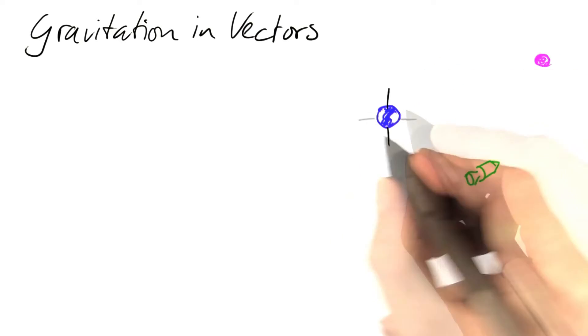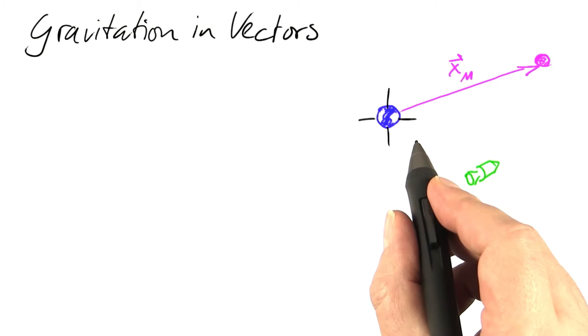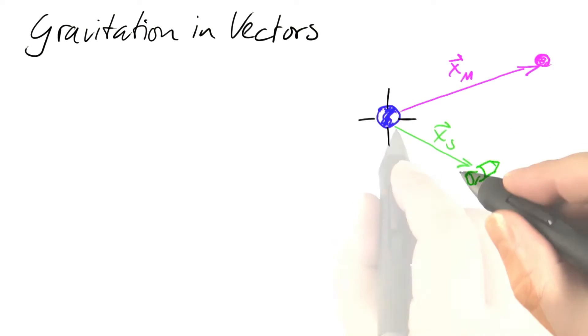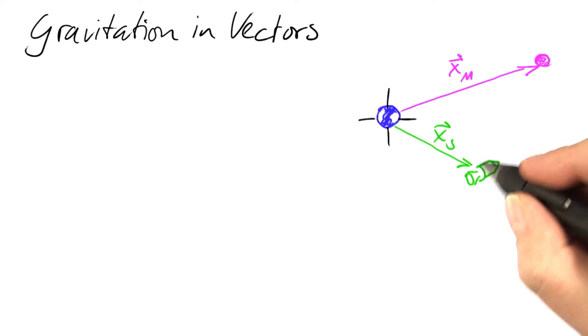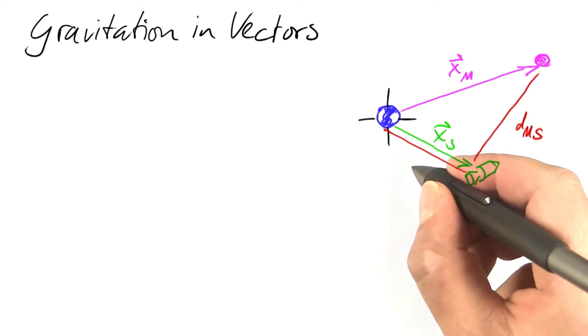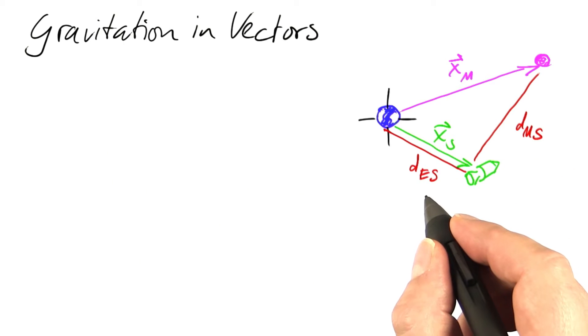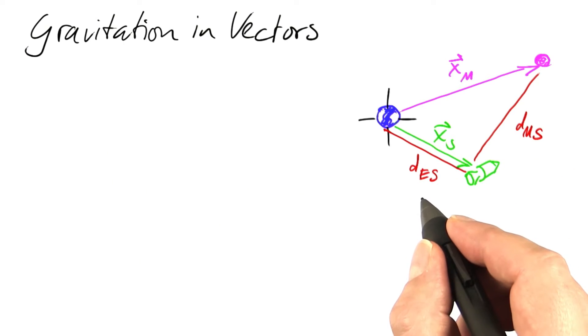Let's place the earth at the origin. The moon sits at a vector xm, the spacecraft sits at a vector xs, and we need the distance of the spacecraft from the moon, let's call that dms, and we need the distance of the spacecraft from the earth, let's call that des.